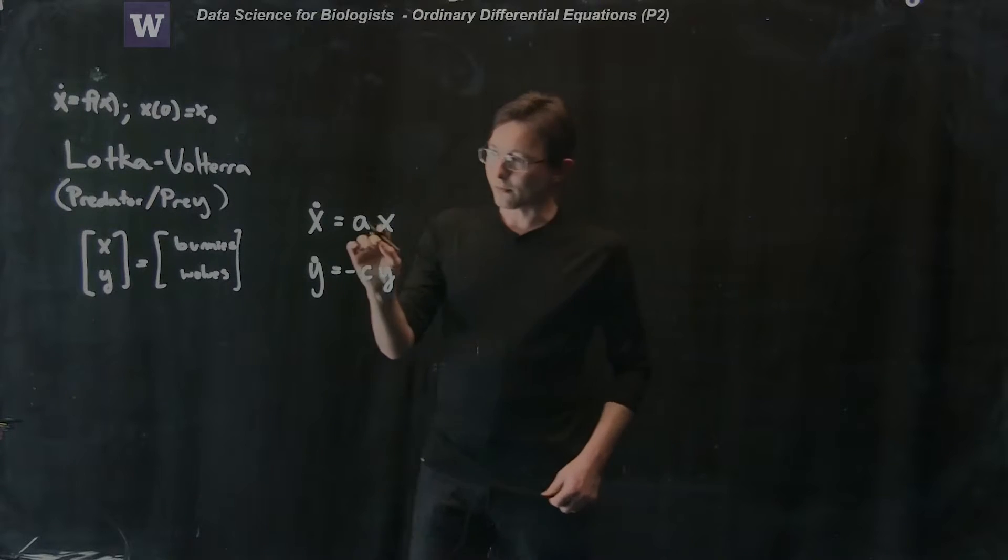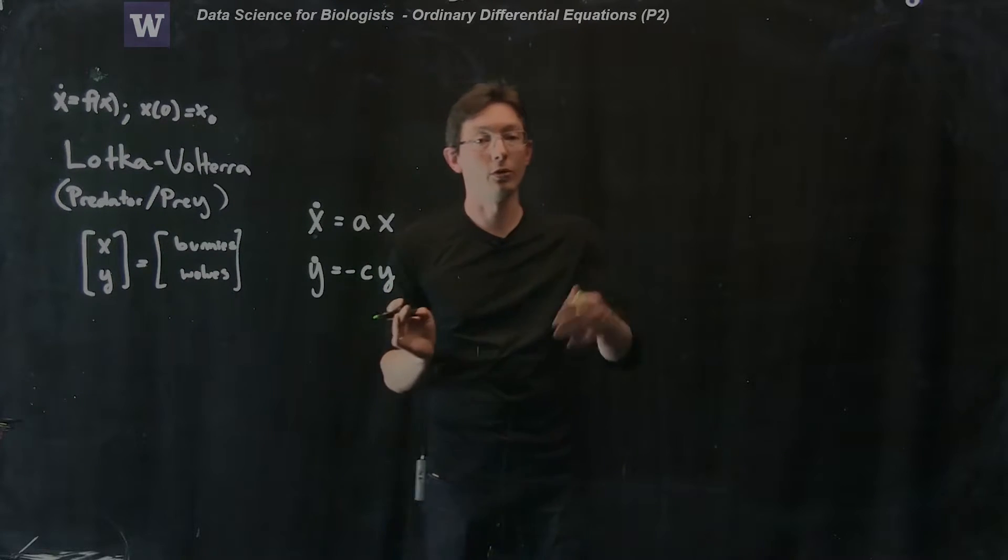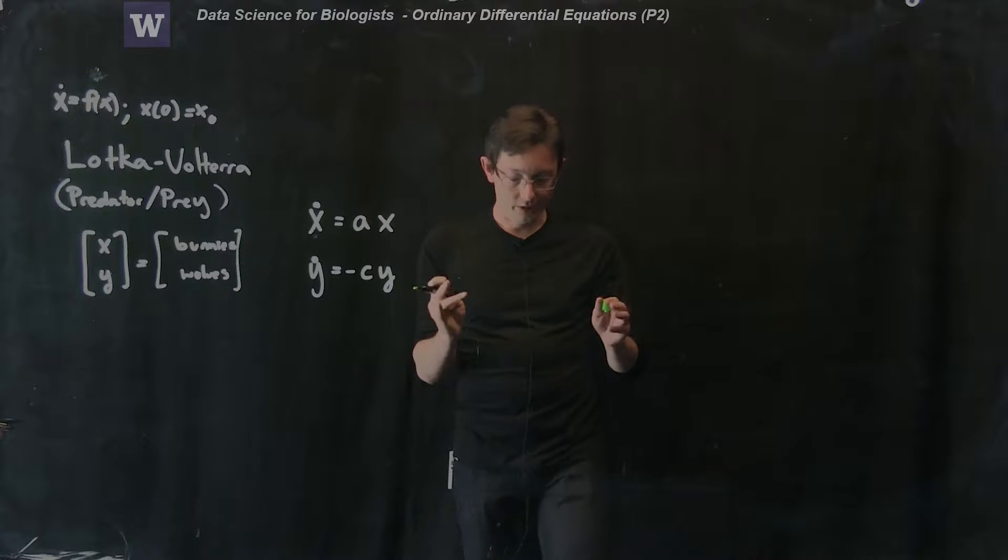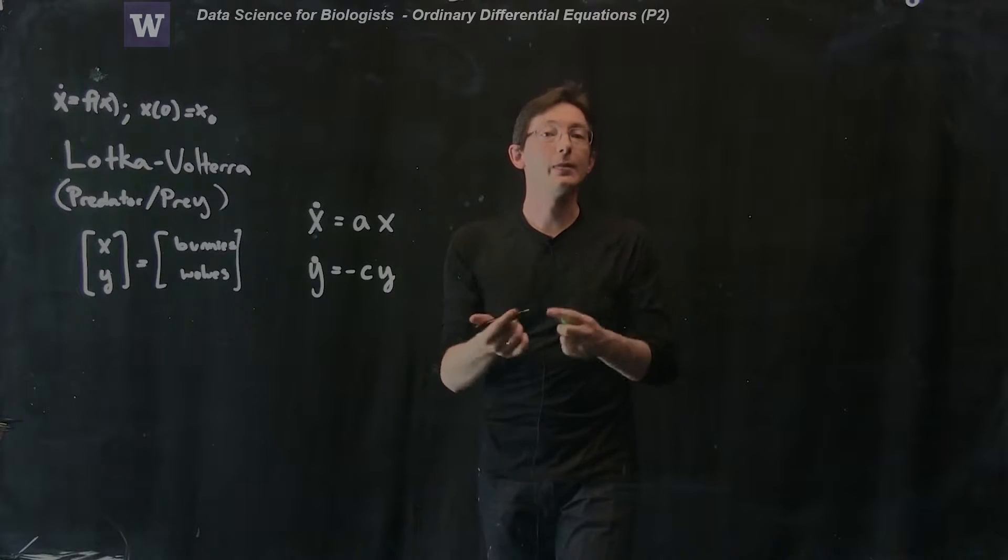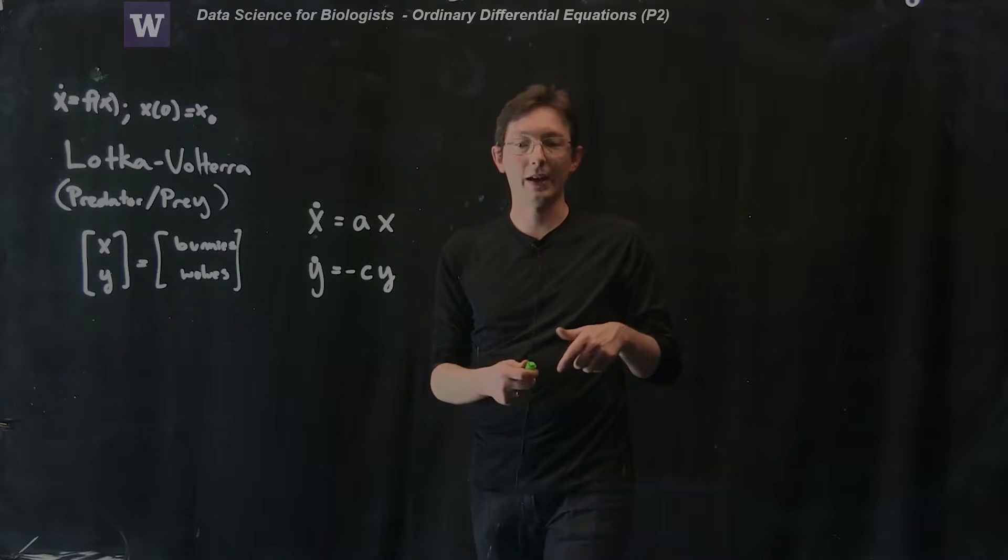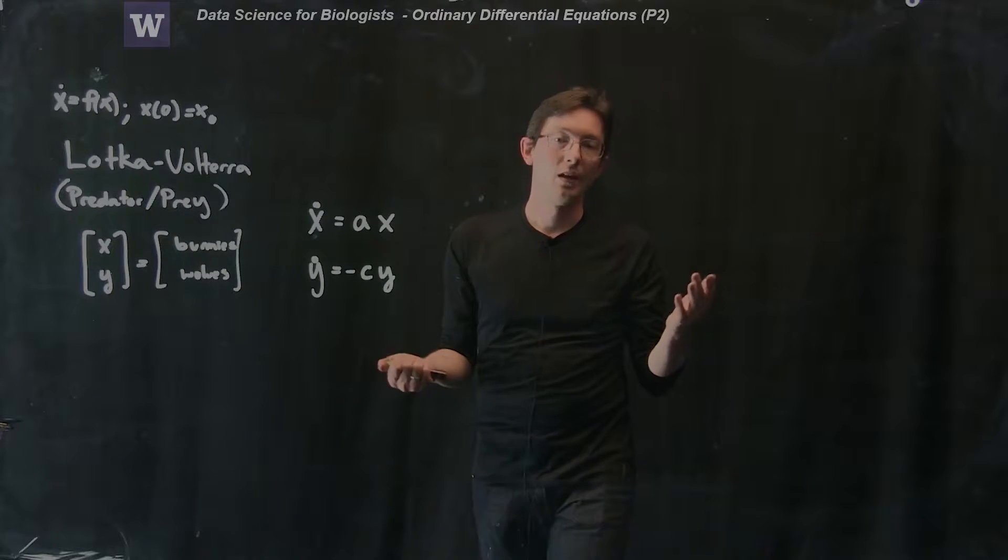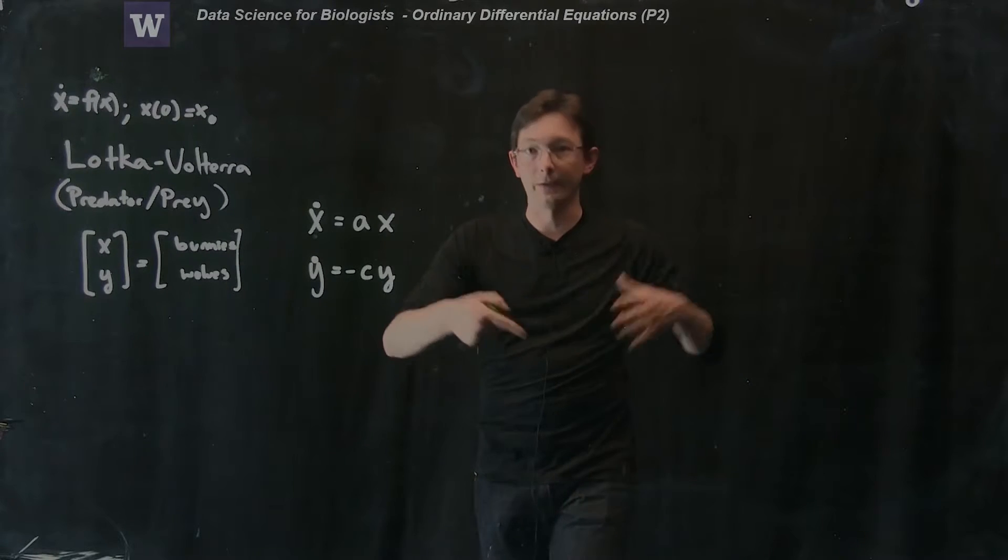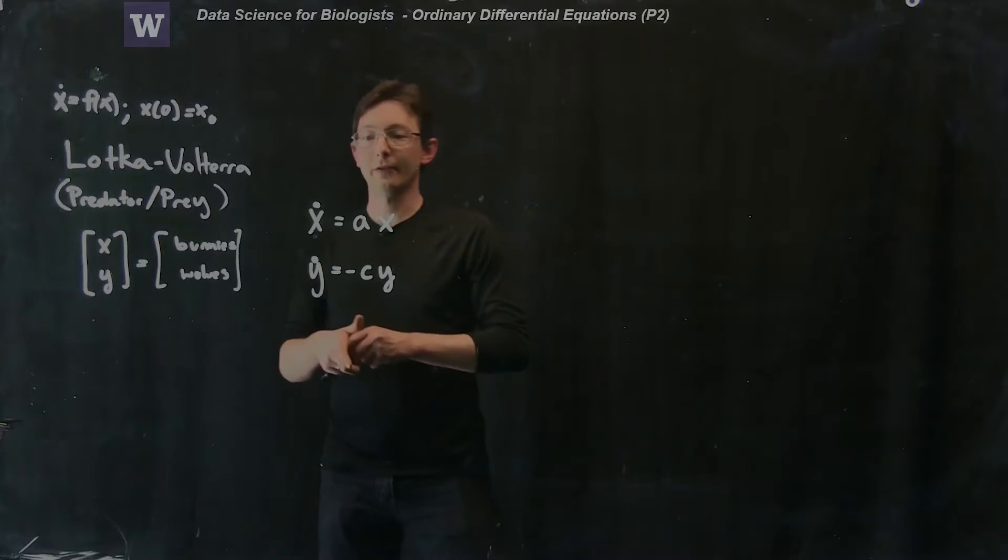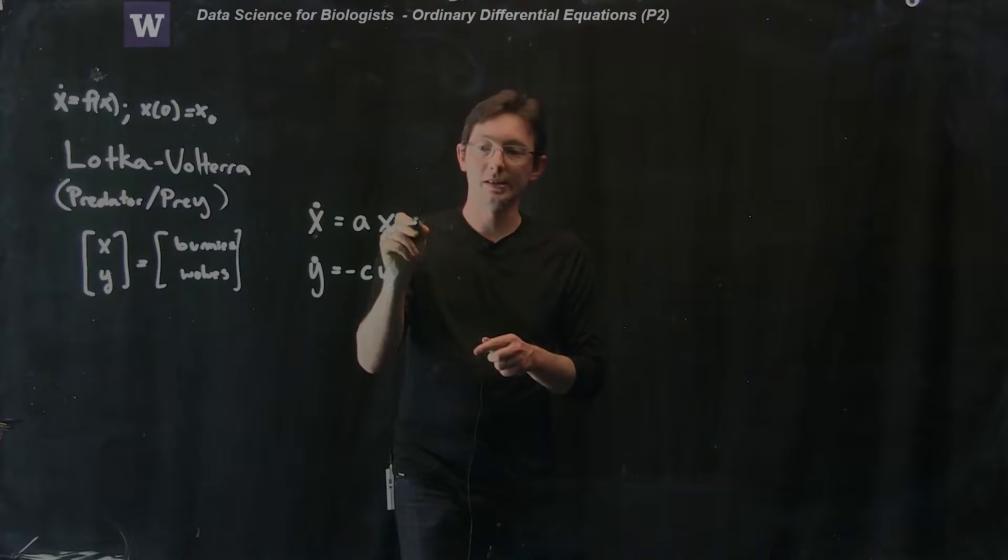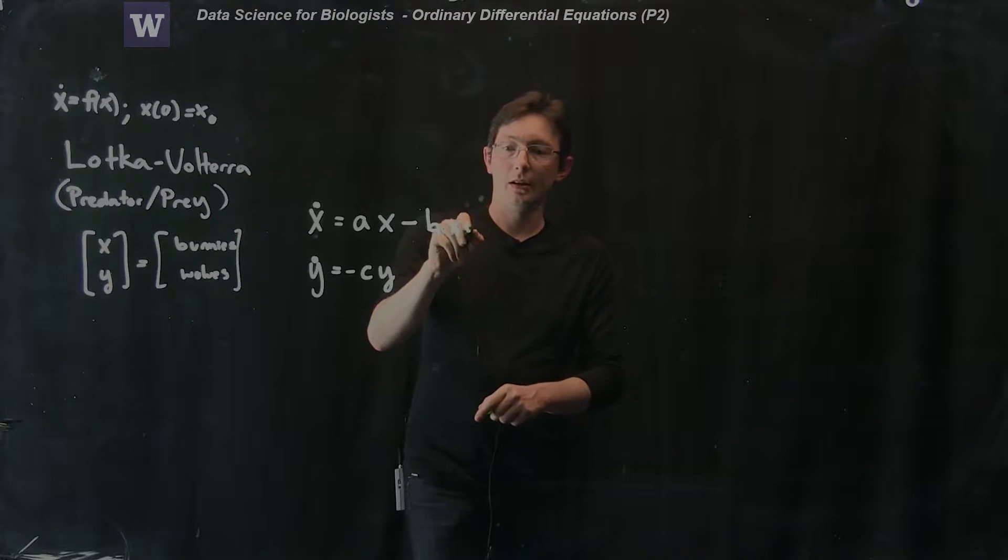What's interesting is that bunny populations would naturally grow exponentially, but they're going to be held in check by the number of wolves. The way that we model this is we look at how many bunnies I have times how many wolves I have, and that gives me a rough estimate of how many wolves are eating bunnies. If I have a bajillion bunnies but only one wolf, that one wolf can only eat so fast. But if I have a bajillion bunnies and 50 wolves, they're going to eat 50 times faster. So my bunny population also decreases, they get eaten, at some rate given by some number B times my bunny population times my wolf population.